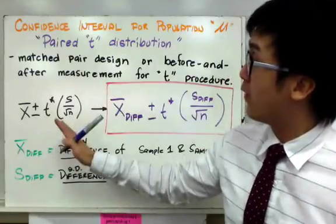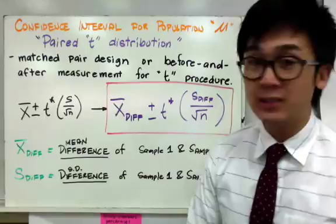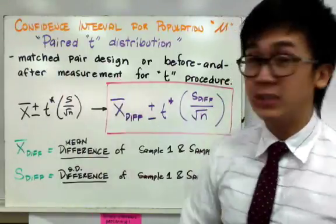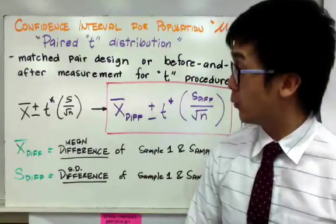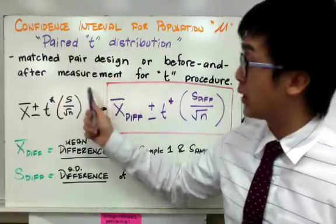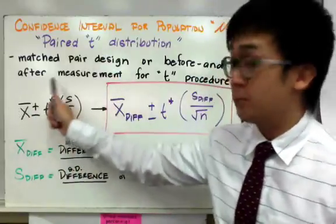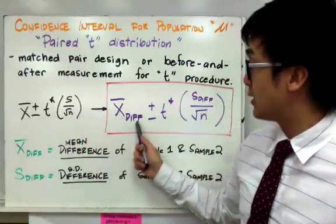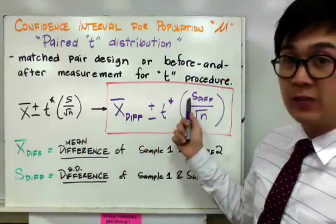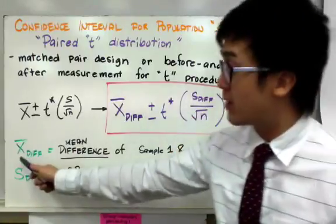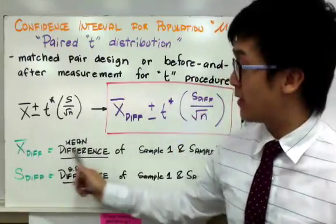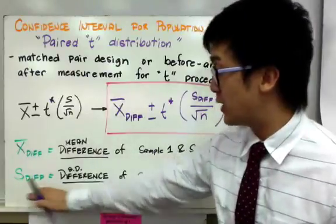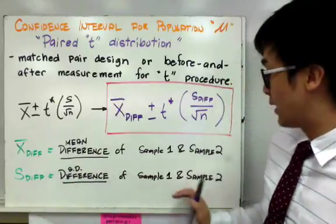So most problems involving confidence interval or hypothesis testing in paired T design work on or concentrate on the differences of sample one and sample two. Now since this is still a T distribution, we're going to use the same formula, but this time we're going to change its variable into mean difference plus or minus T star times the standard deviation difference all over the square root of N, wherein the mean difference is the mean difference of sample one and sample two and the S difference is the standard deviation difference of sample one and sample two.